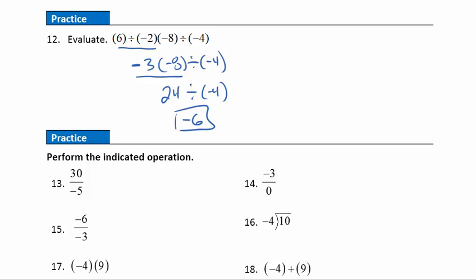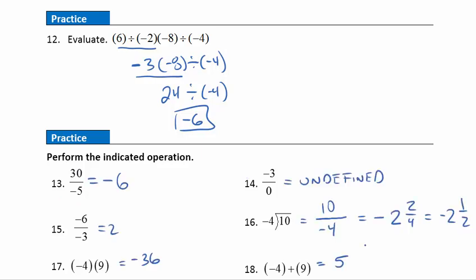Pause your video player and work practice questions 13 through 18. When done, hit play and I'll show you the answers. Question 16 was a little tricky: negative 4 doesn't divide evenly into positive 10. It's easier to write this as a fraction. The answer is negative because we have a positive and a negative. 4 goes into 10 two whole times with a remainder of 2, written as 2 over 4, which simplifies to 1 half. So the final simplified answer is negative 2 and a half.